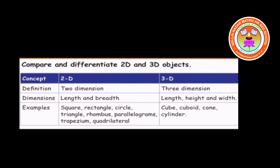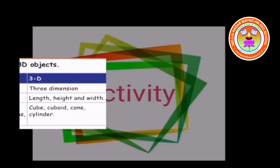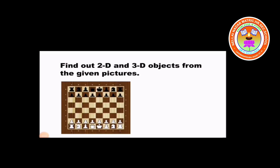Ok children, here are some activities. Find out 2D and 3D objects from the given pictures. What is this? This is a chess board. Is it 2D or 3D shape? Very good — this is a 2D shape.